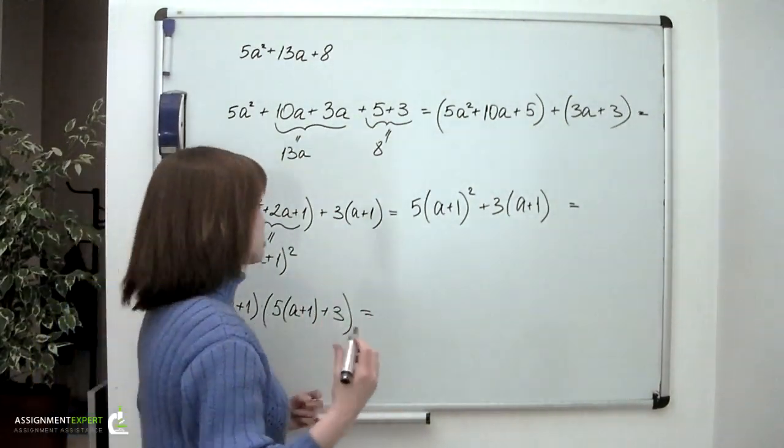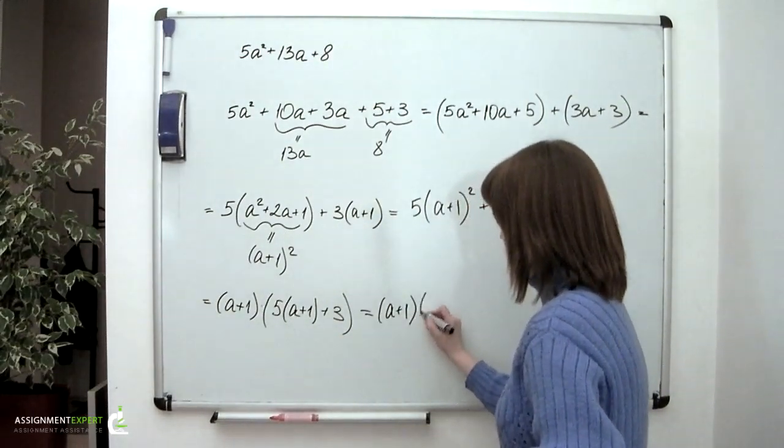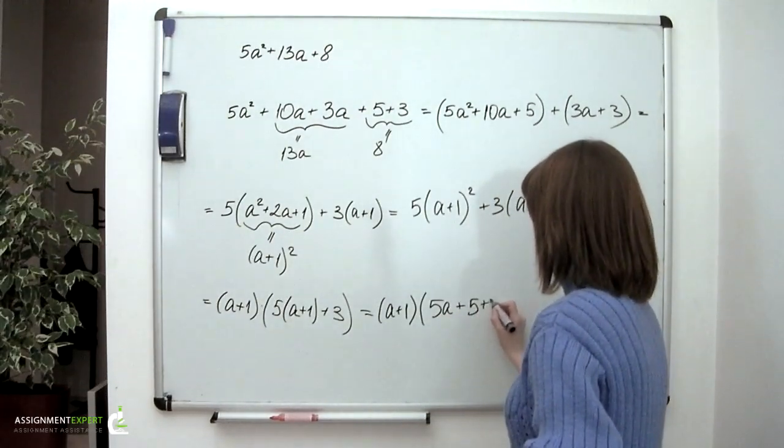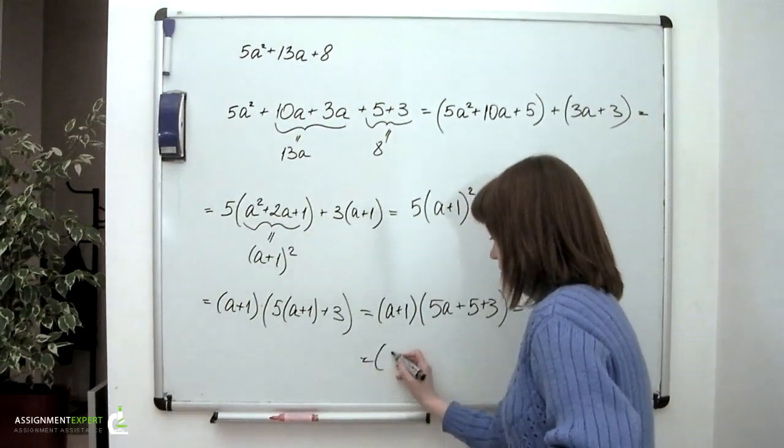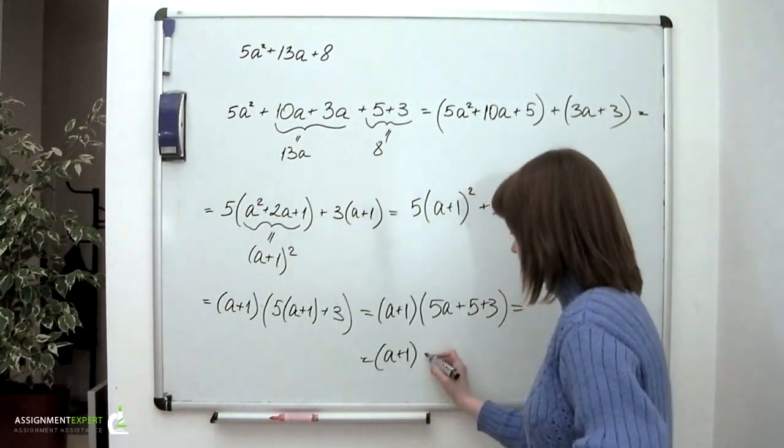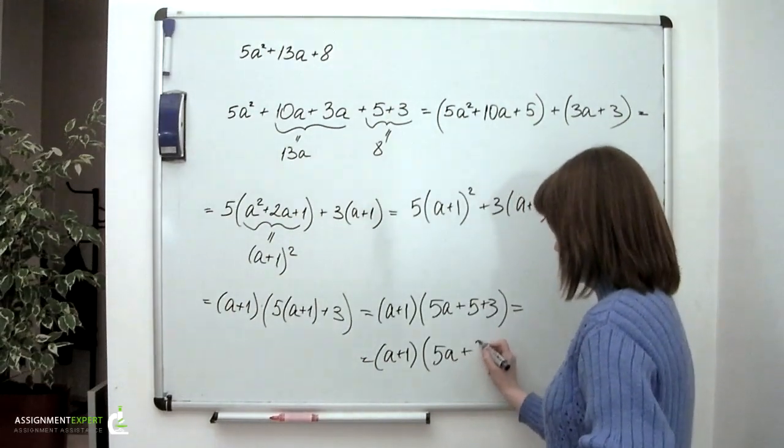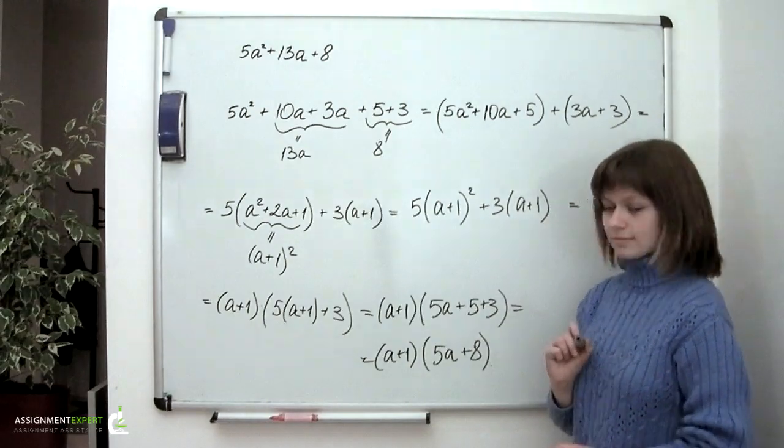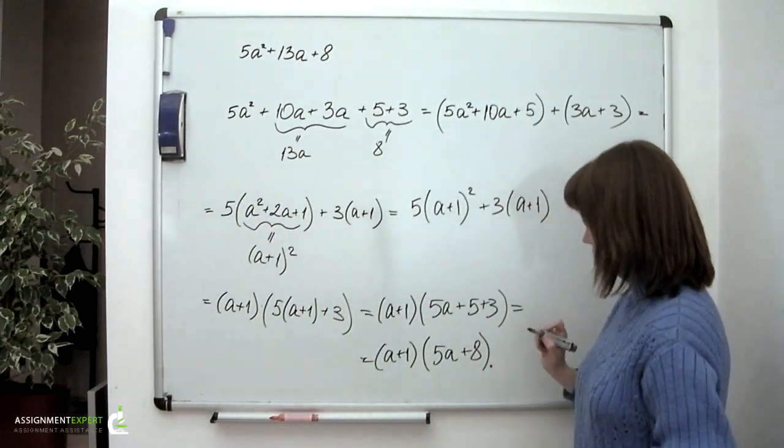So we'll go a plus 1 times 5 times a plus 1 plus 3. Or opening these parentheses, we'll have a plus 1 times 5a plus 5 and plus 3. Or a plus 1 times 5a plus 8. So this is our answer.